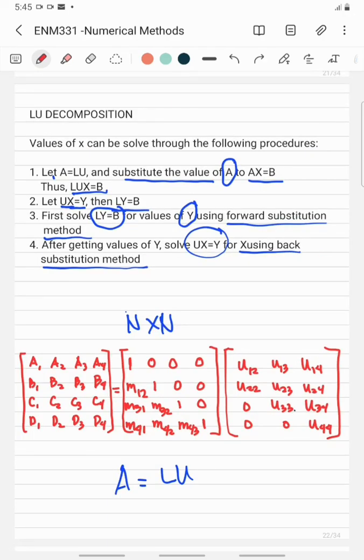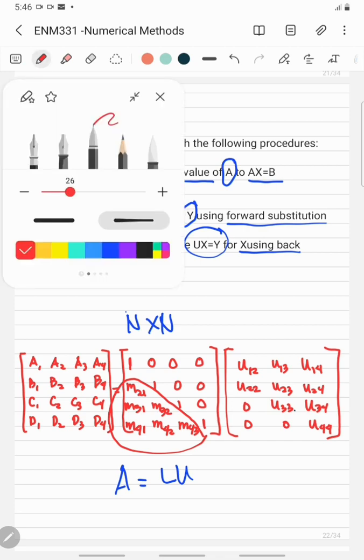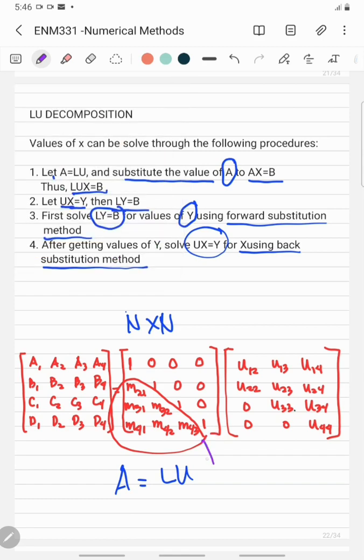The lower triangular matrix below the main diagonal has M21. We have to change this to one. Then we have M31, M32, M41, M42, and M43. These are the factors or multipliers.